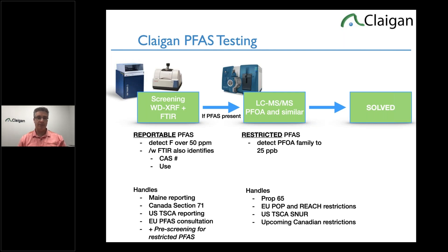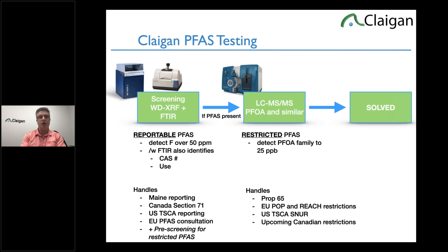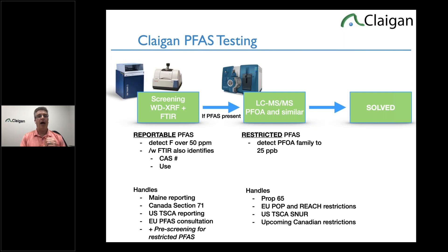PFOA only exists inside a fluoropolymer at well over 10,000 ppm. PFOA is a trace manufacturing aid or degradation product — depending on the situation — to a PFAS polymer. It's only detectable at 25 parts per billion in PFAS that are mostly in the 100,000 ppm fluorine range. So we use the WDXRF to find the fluorine. A lot of people use the EDXRF — energy dispersive XRF, like the handheld — for RoHS, and they're very good and fast. We have 15 of them. They're superb for a lot of the higher elements.